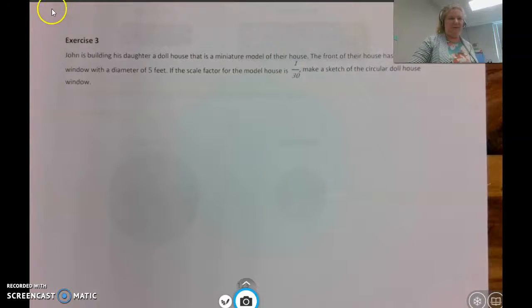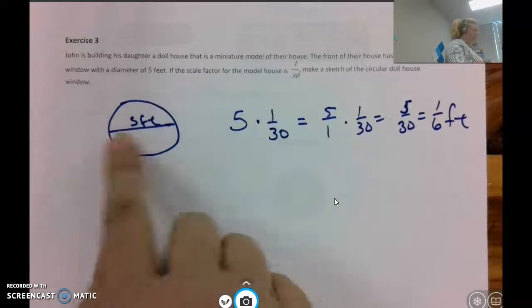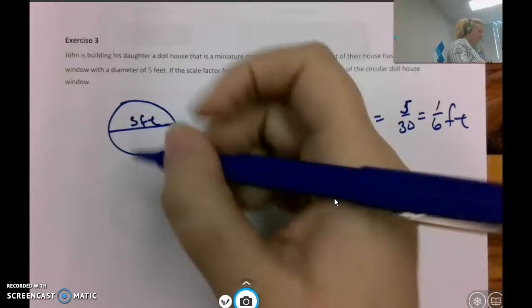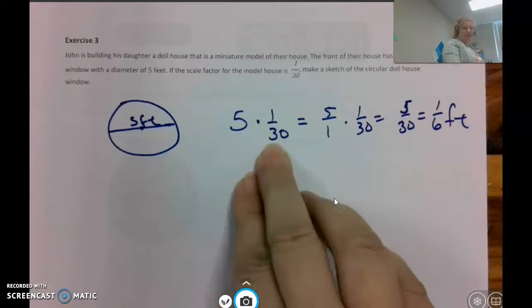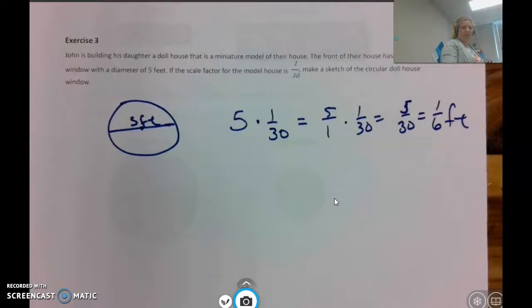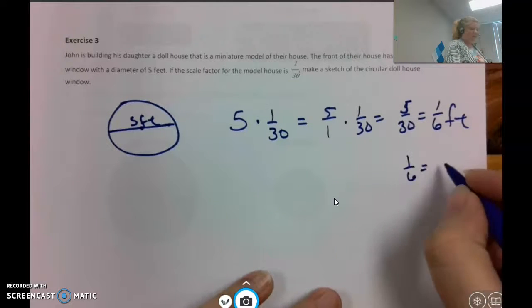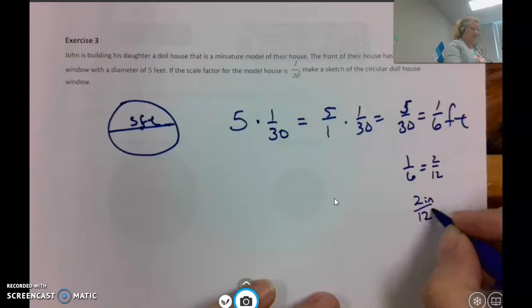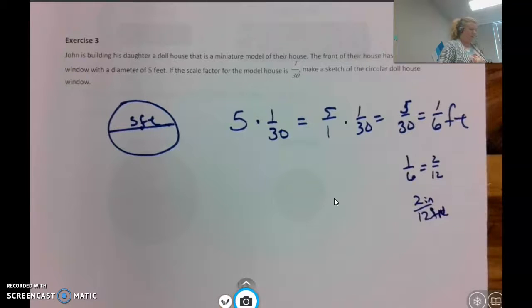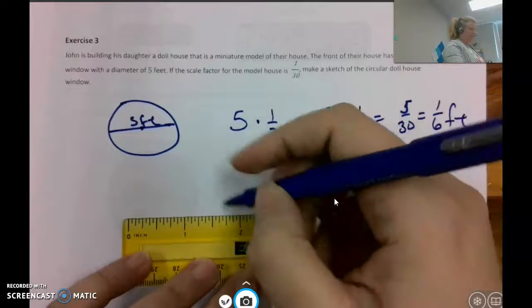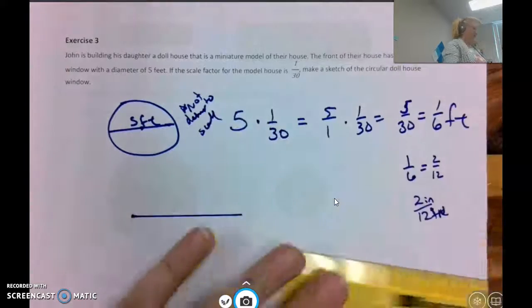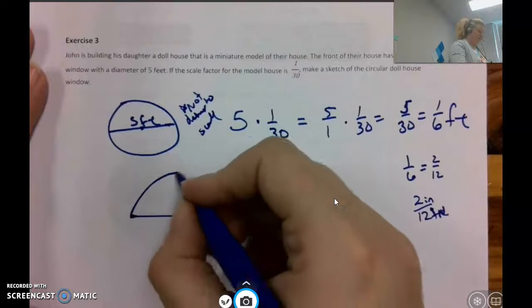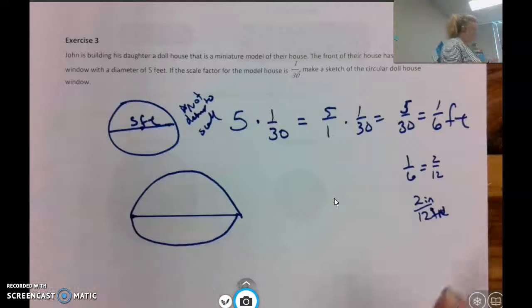Now we'll look at John. I'll pause this, give you time to read that. I went ahead and drew the circular window. And I have the five feet here for the diameter, which is all the way across the circle through the center. Again, my drawing not perfect, but we get the idea. Then I did the original length times the scale factor, which came out to five-thirtieths or one-sixth of a foot. From the work I just did, I know that one-sixth is two-twelfths, which would be two inches out of twelve inches. If I was going to do a circle with a two, this is not drawn to scale. Here's two inches for my diameter. I really... okay, we're going to pretend that is not a good circle, but we're going to pretend it is.